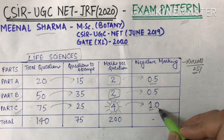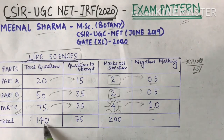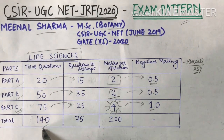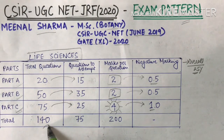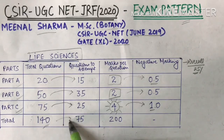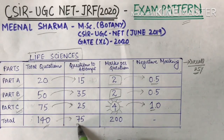You can increase your score or reduce your score. The total questions asked are 140, out of which we have to attempt only 75 questions.